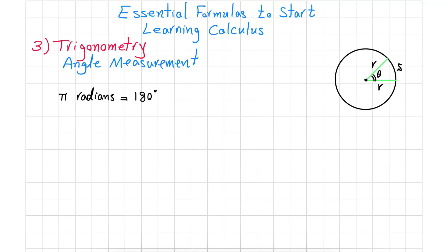...one degree is equal to pi over 180 radians, where pi is in radians. And one radian is equal to 180 degrees over pi.